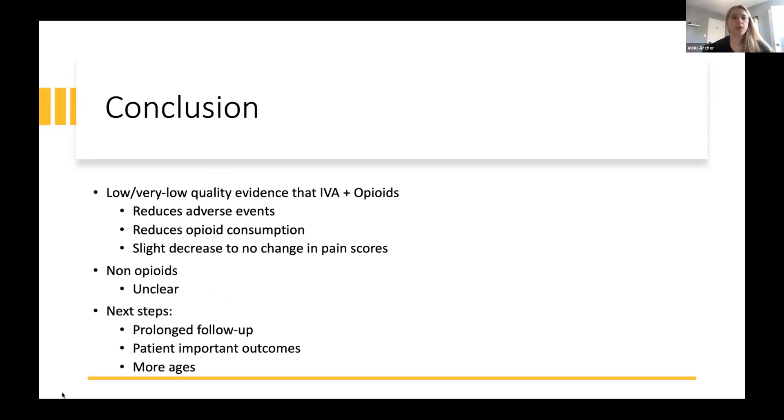So what can we conclude from our research? Ultimately, we have very low to low quality evidence suggesting that when intravenous acetaminophen is added to opioid-based pain regimes compared to opioid-based regimes alone, there's a reduction in adverse events and opioid consumption with little to no change in pain scores. When you think back to the teeter-totter that we talked about at the beginning of this presentation, this becomes a quite interesting result, showing us that potentially adding intravenous acetaminophen to these regimes may allow us to reduce opioid exposure without sacrificing pain control, which is really important.